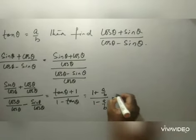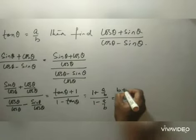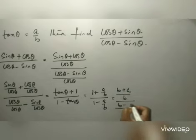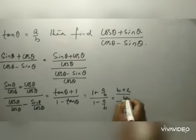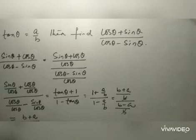Here, B is the LCM, so this becomes (B + A)/B divided by (B - A)/B. The B's cancel, giving the final answer (B + A)/(B - A).